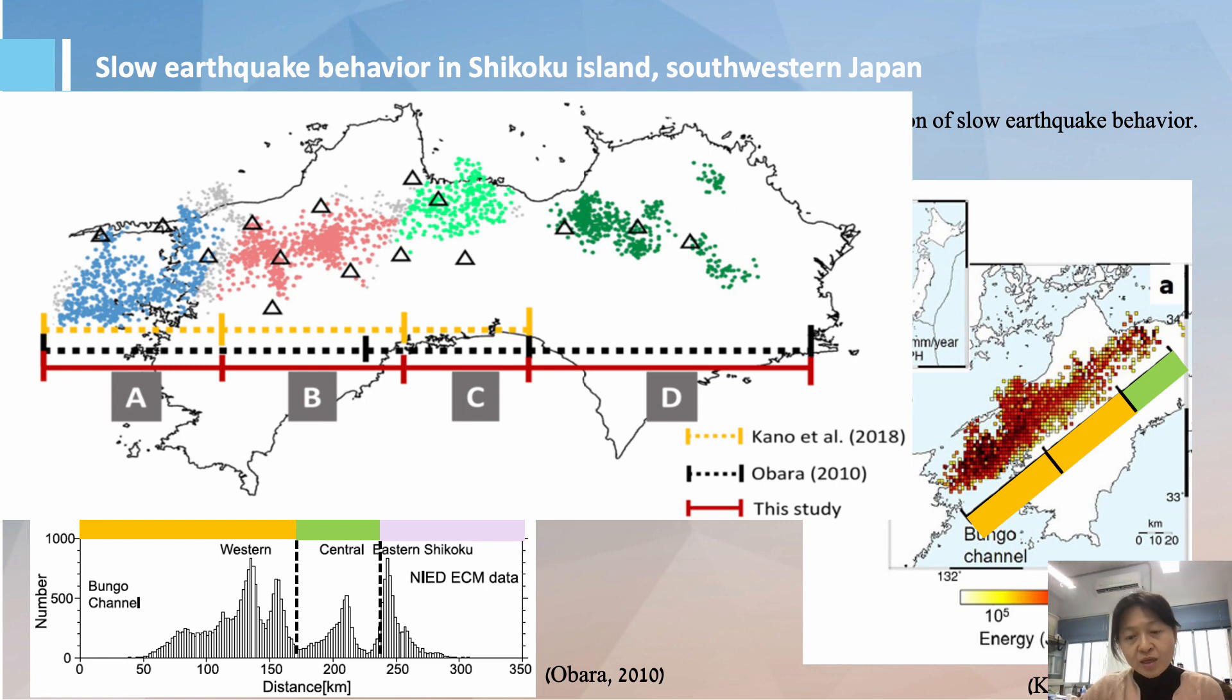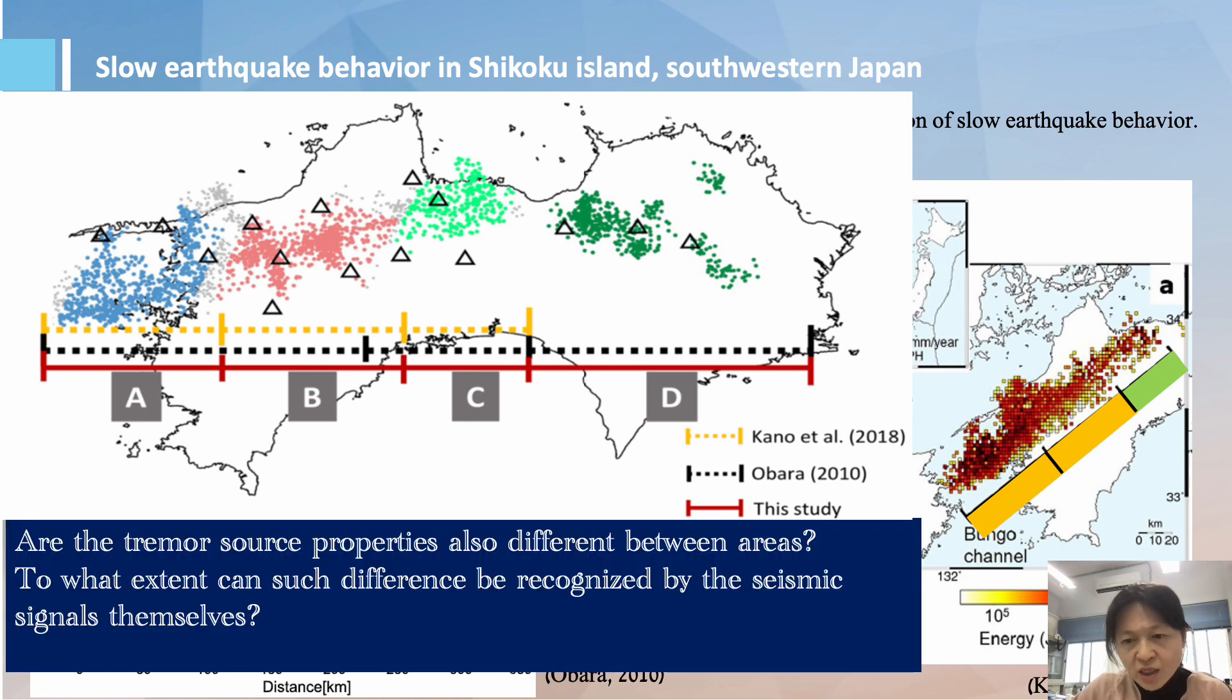And that said, there must be a strong regional difference in mechanical properties responsible for different characters of tremors. So now the question is, how much does the tremor signal itself tell us about the regional difference?